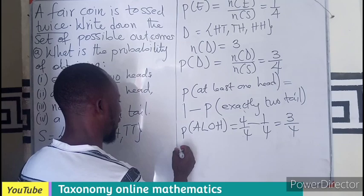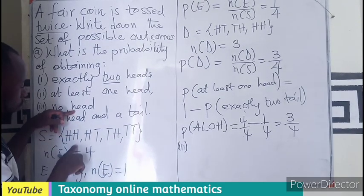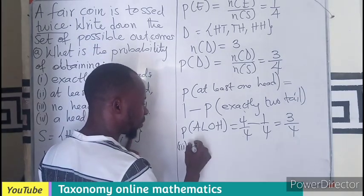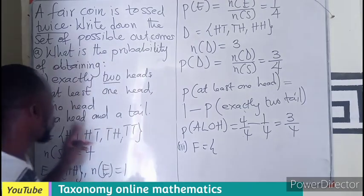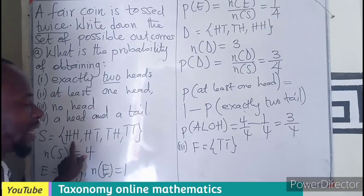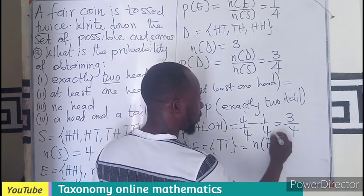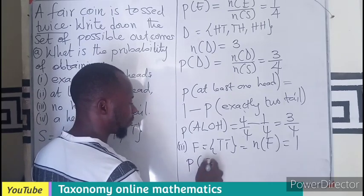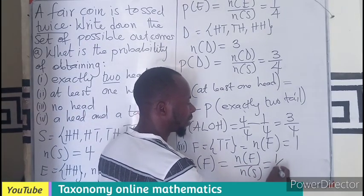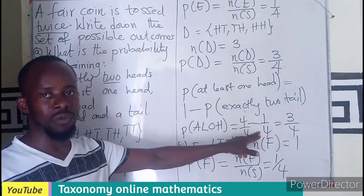Now we look for the probability of no head. No head means exactly two tails. We let F equal the event of obtaining no head, which is only the outcome tail and tail. That is the only outcome with no head present. So the number of elements in F is 1, and the probability of F equals 1 over 4, which is one quarter — the same as the probability of exactly two heads.